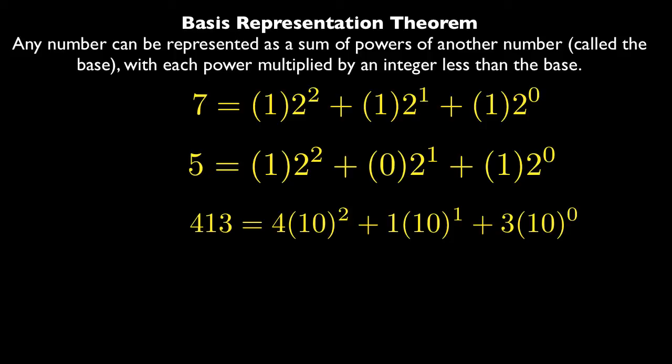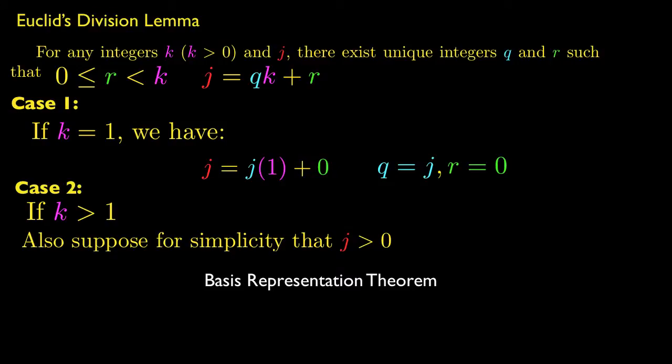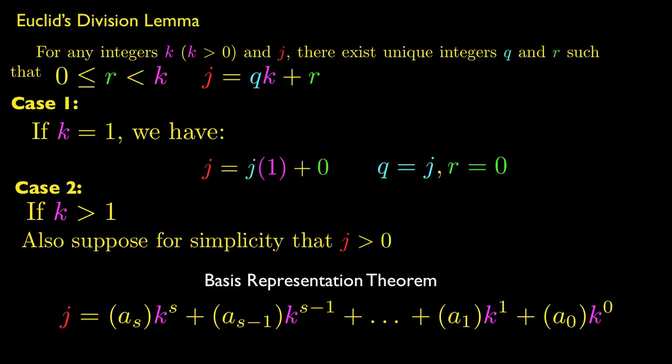That's exactly what we're talking about when we use the basis representation theorem. And the key is we can pick any number to be the base. We're used to 10 most of the time, or 2 if you're interested in computer science. But any number could be represented with any base. So that's important for this proof. Because that means that we could represent j using the base k.